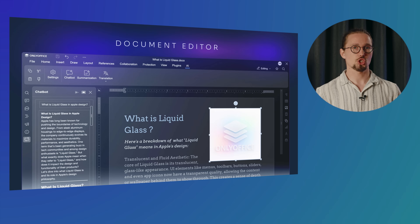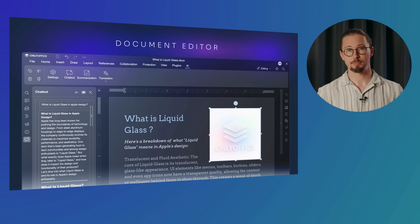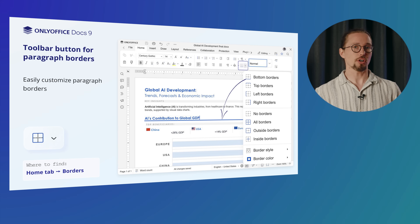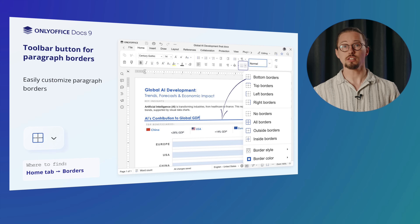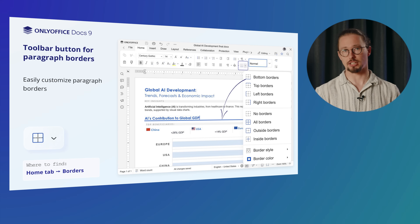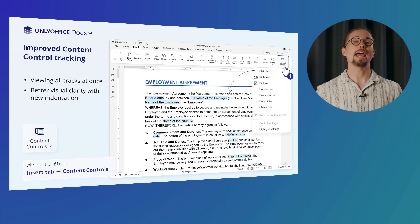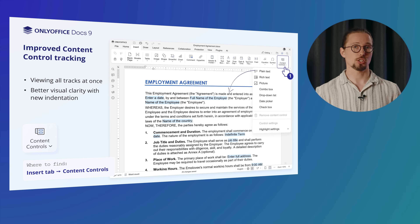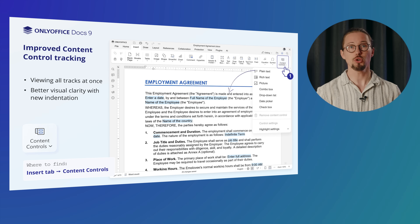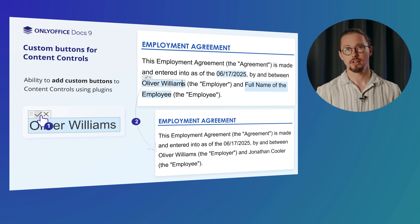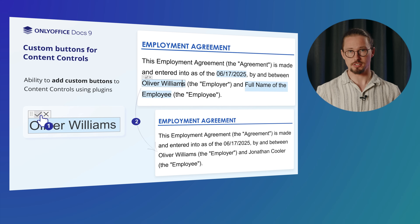Now on the list is the Document Editor. Quickly add or adjust paragraph borders with a single click using the Edit Toolbar button. Experience updated content control tracking — view all tracks at once and enjoy better visual clarity with new indentation. Enhance your workflow with the ability to add custom buttons to content controls using plugins.